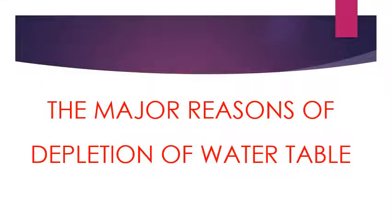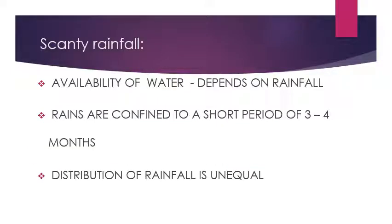The major reasons for depletion of water table are as follows. First is scanty rainfall. India is a big country and the availability of water depends mainly upon rainfall. Rains are confined to a short period of 3 to 4 months. Most parts of the country therefore lack supply of surface water for a large part of the year. Also, in India, the distribution of rainfall is unequal, because of which we face floods and droughts every year in some or other parts of the country.